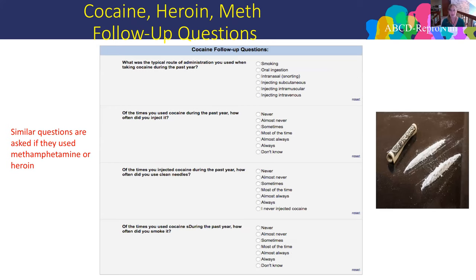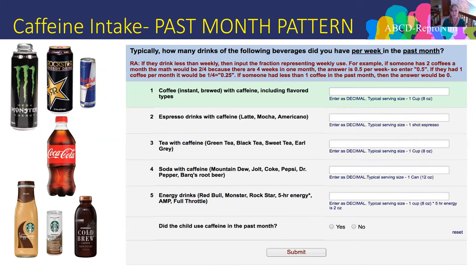For cocaine, heroin, and methamphetamine, route of administration questions ask specifically whether participants are injecting these substances and whether they use clean needles. The caffeine intake inventory asks about the typical number of standard servings per category per week in the past month, using instructions that describe standard serving sizes—for example, 16 ounces equals two serving sizes. Summary variables provide total and average caffeine use per week in the past month.